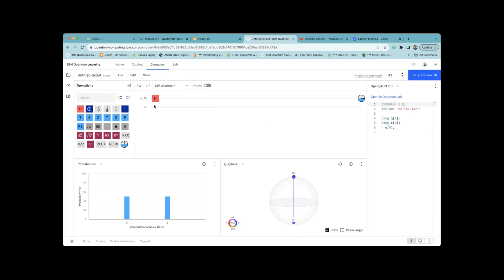At the bottom left, we can also see the probability of observing the two states, each one is 50-50. So this is superposition.